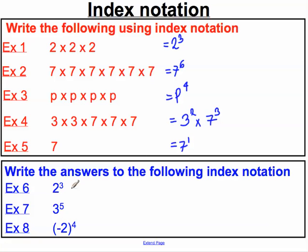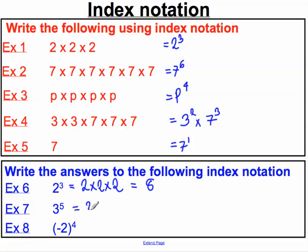Finally, let's finish by actually evaluating — that means working out the numerical answer — to some expressions given in index form. Two to the power of three: we take the base number two and multiply it by itself three times — two multiplied by two multiplied by two. Two times two is four, times two is eight. Three to the power of five: our base is three multiplied by itself five times. Three times three is nine, times three is 27, times three is 81, times three is 243.